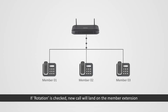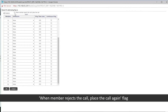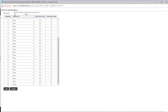Check rotation if required. If rotation is checked, a new call will land on the member extension next to the one that received the previous call. When a member rejects the call, the 'place the call again' flag is used for SIP extensions in the routing group.